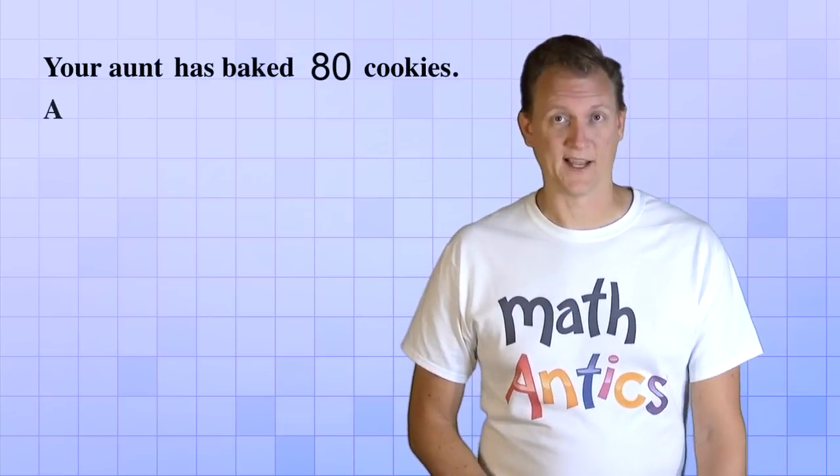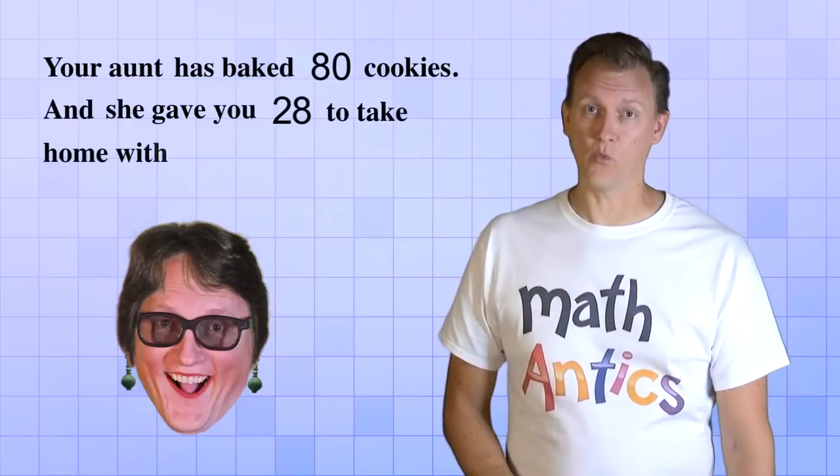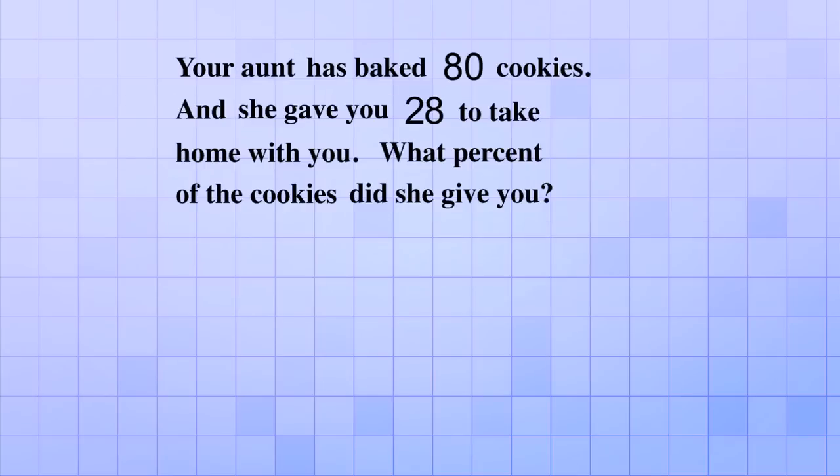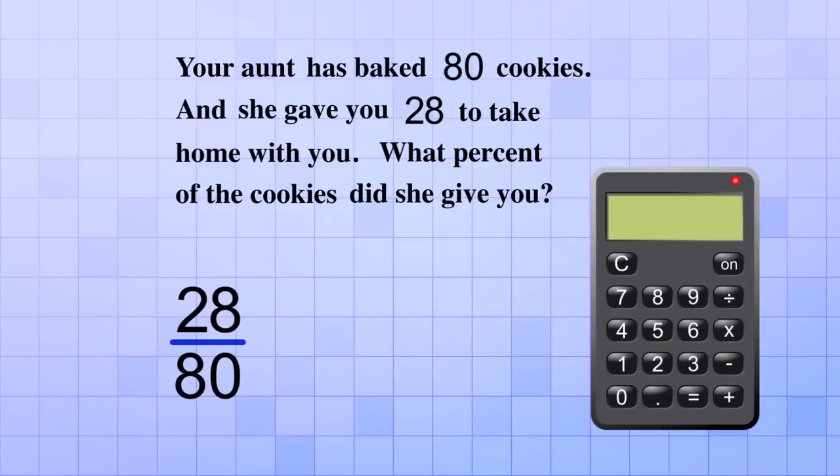To see this way in action, let's try this word problem. Your aunt has baked 80 cookies, and because she's a very nice aunt, she gave you 28 to take home with you. What percent of the cookies did she give you? Okay, so we know that the total is 80, and that the part we got was 28. That means that our fraction will be 28 over 80. Using our calculator, we enter 28 divided by 80, and we get 0.35. That's the decimal form of the fraction.